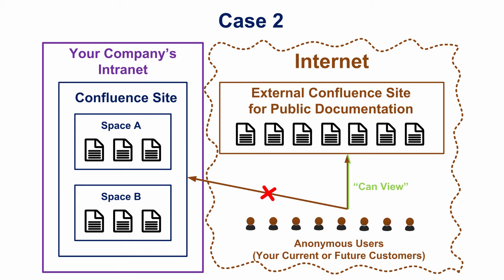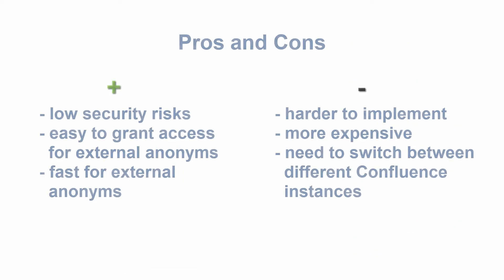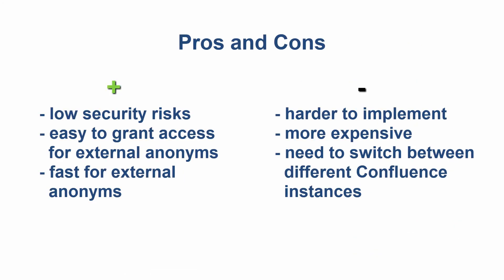In such cases, we don't even know the people who want to view the content and, of course, can't create Confluence accounts for all of them. We recommend you to have a separate Confluence instance for such anonymous users and keep your internal confidential information in the corporate Confluence instance. If somebody hacks your site with public access, they won't be able to get the confidential information of your company because you don't store it there. It is better to host your Confluence instance with public access not in your local network but on the Internet to reduce page response time for your customers.